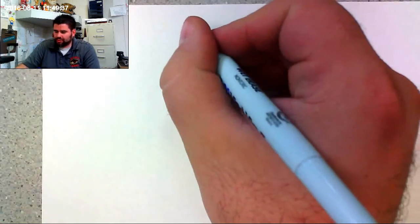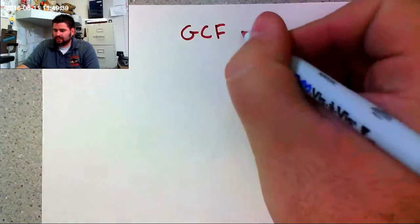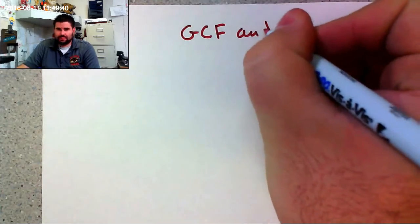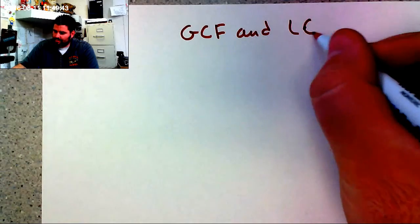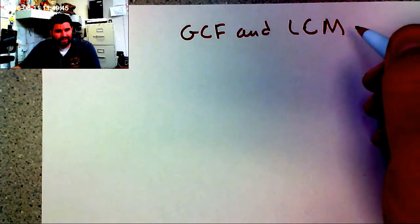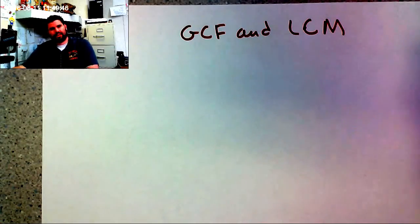Hello, everyone. Welcome back to Mr. Anderson's Algebra I class video tutorials. And today, what we're going to be talking about is finding the greatest common factor, or GCF, and the lowest common multiple, or LCM, as many people refer to.